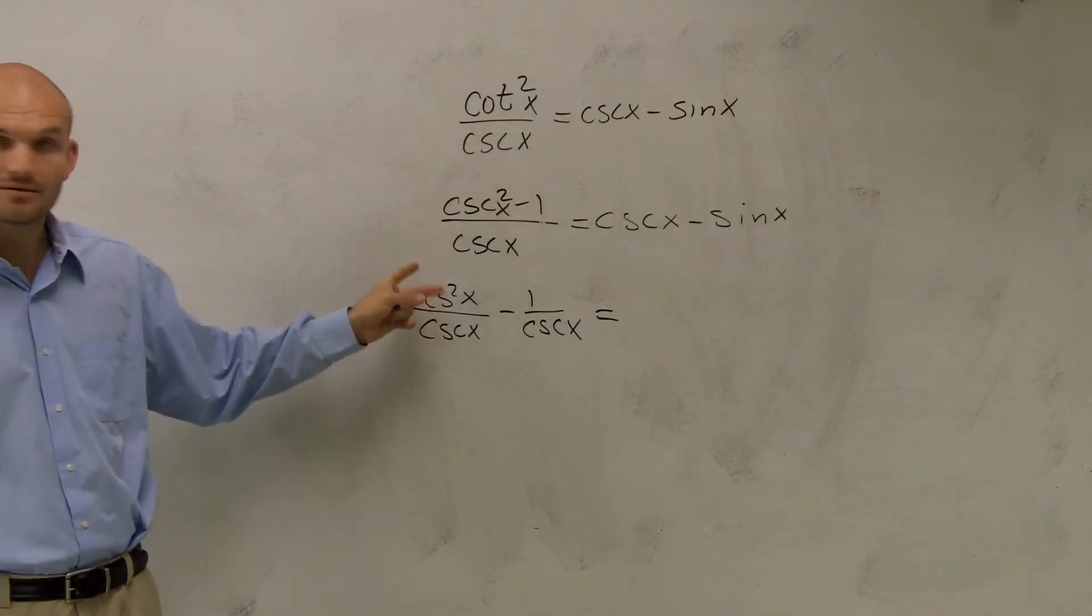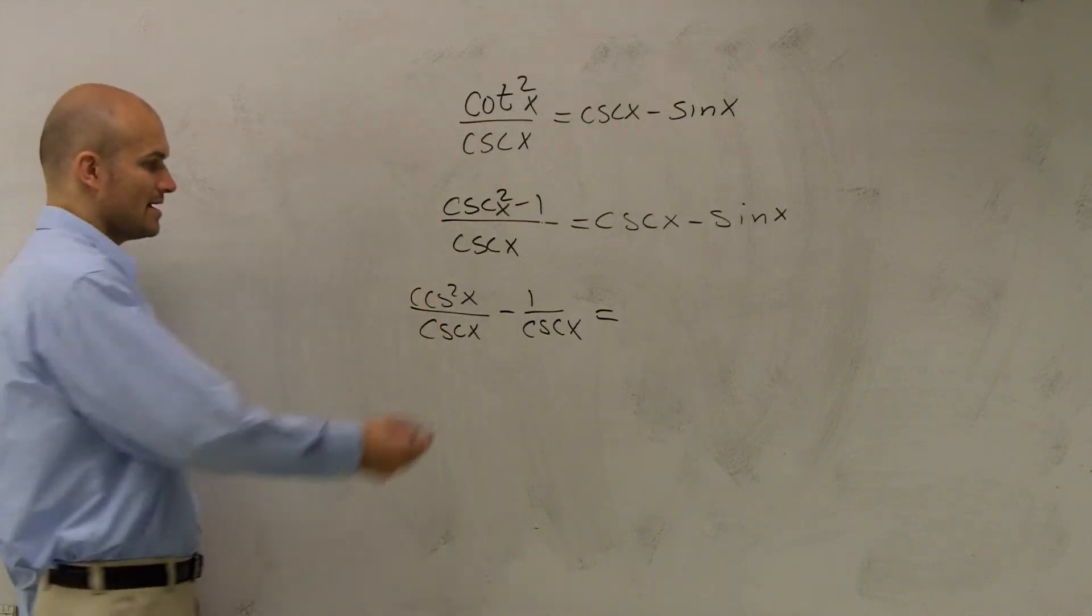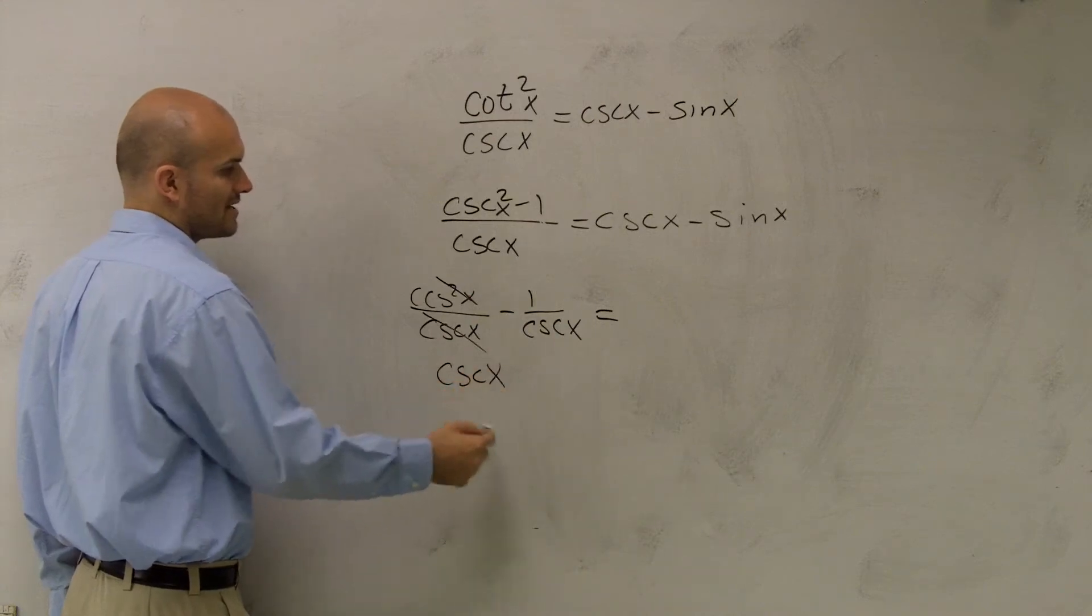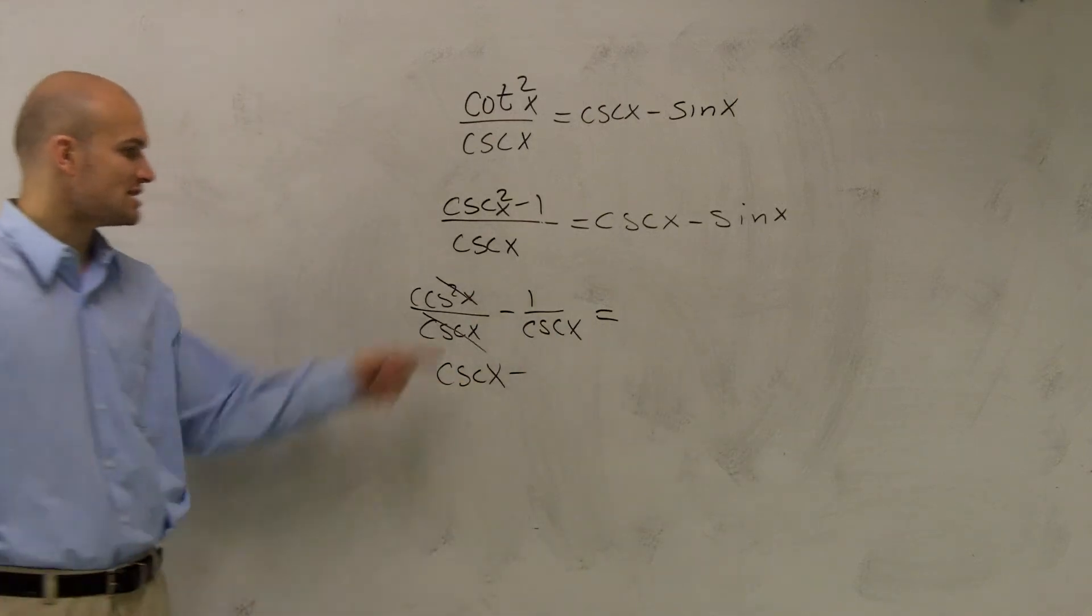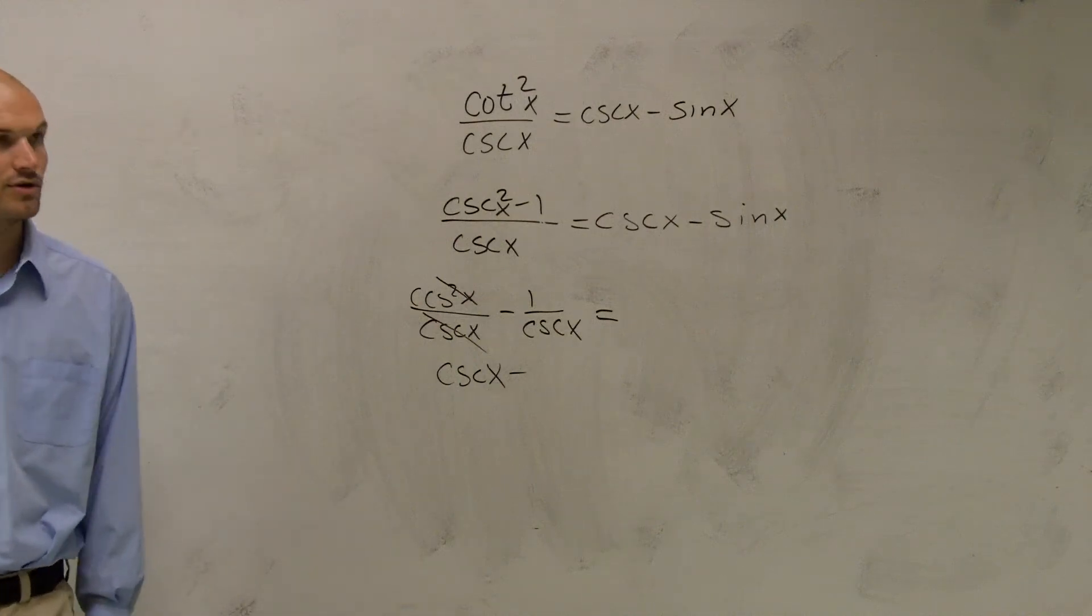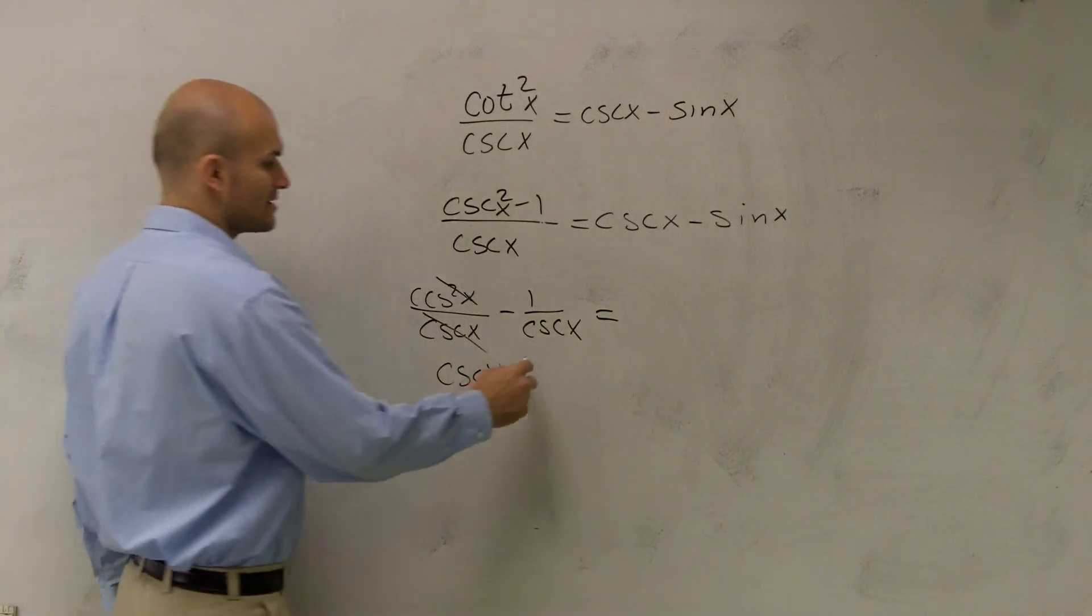Well, cosecant squared divided by cosecant cancels out to just give me cscx minus, what's the reciprocal of 1 over your cosecant of x? It's going to be your sine of x.